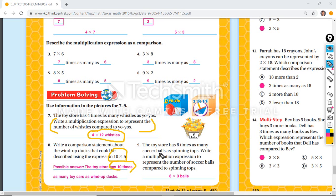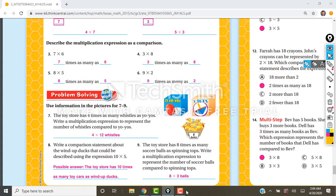The next one, the toy store has eight times as many soccer balls than spinning tops. Write the multiplication expression to represent the number of soccer balls. Soccer balls are what? What if they say? Eight times as many and how many tops do you have? Three spinning tops. So eight times as many as three. So that was easy for you. Hopefully you did okay.